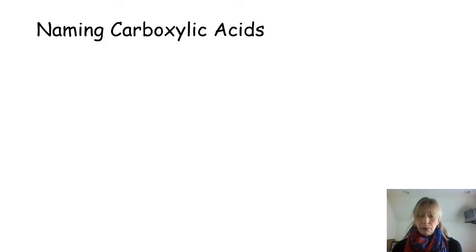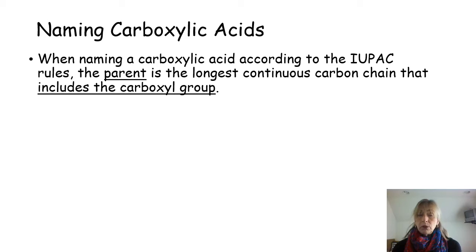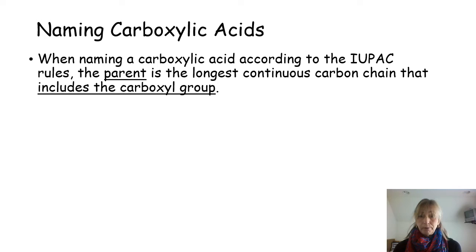When naming a carboxylic acid using the IUPAC method, the parent is the longest continuous carbon chain, and here's the key: it includes the carboxyl group — the COOH group. That's what the carboxyl group is. Whenever you look at a carboxylic acid and see this carboxyl group, the parent is going to include that carbon of the carboxyl group.